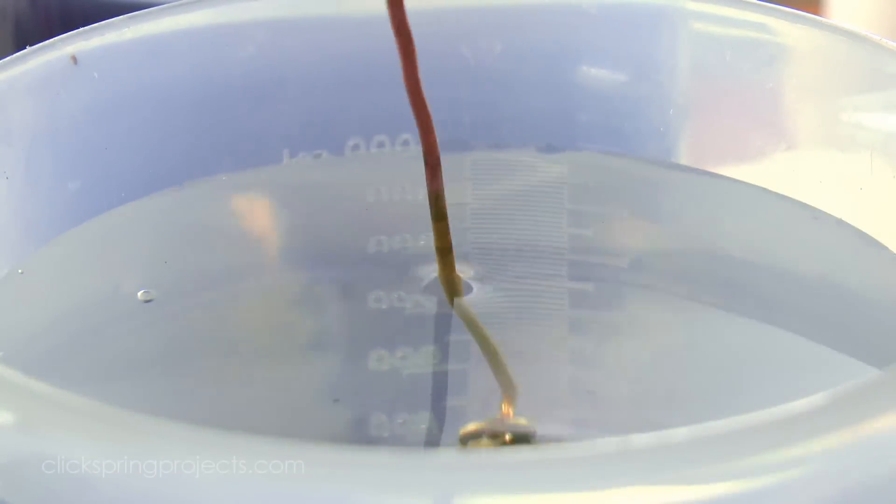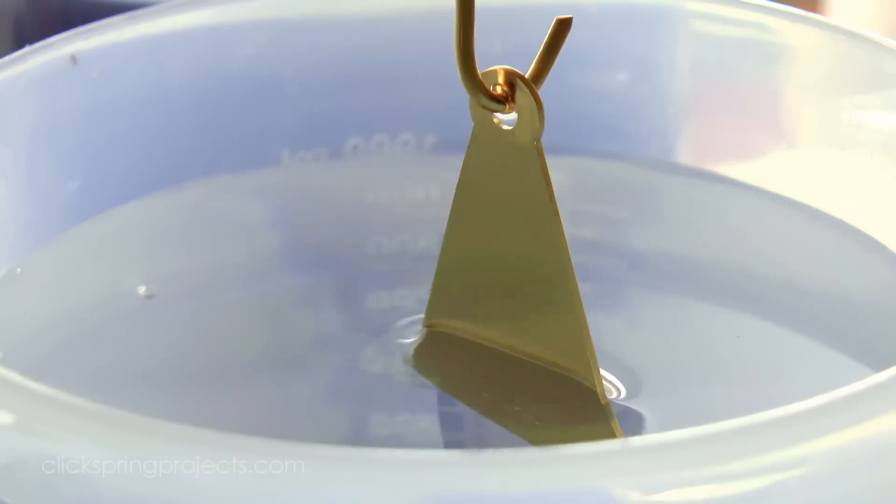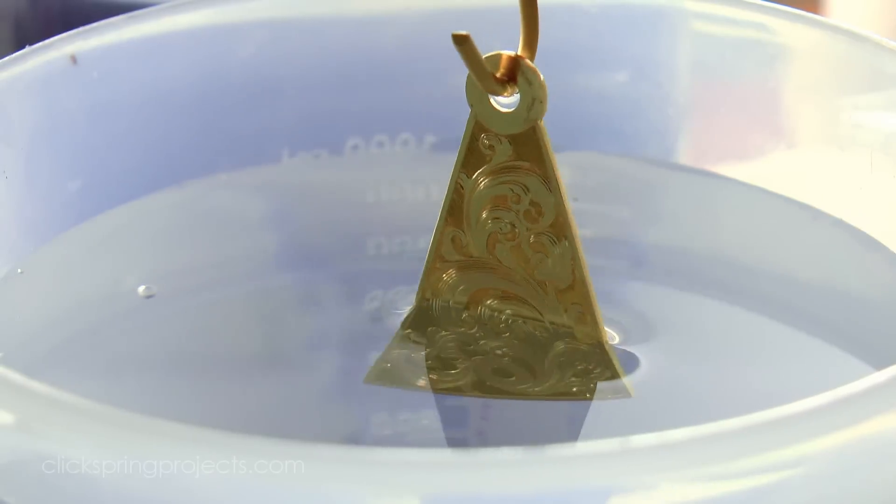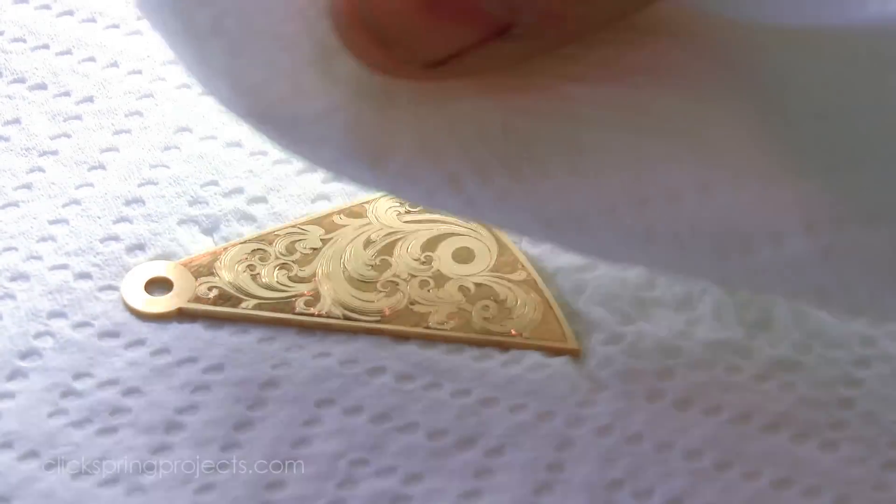Now the good news is that if the nickel plate goes well, then it's smooth sailing to the finish line. Gold plating over nickel is as easy and trouble free as you could hope for. And once the gold surface is locked in, then the oxidation problem is essentially solved, and the part can be handled in a far more relaxed manner.